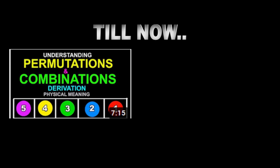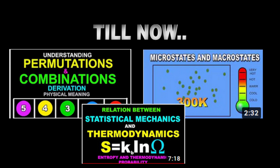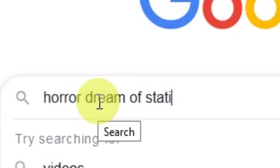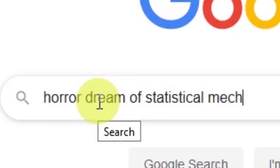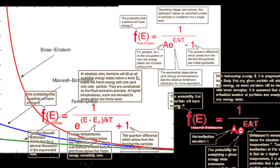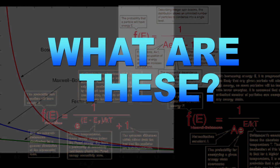Till now we have understood permutations and combinations, what are microstates and macrostates, and also established a relationship between statistical mechanics and thermodynamics. And if you have ever searched about statistical mechanics then you must have seen these graphs and these equations. Now it is time to ask what are these graphs and what are these equations.